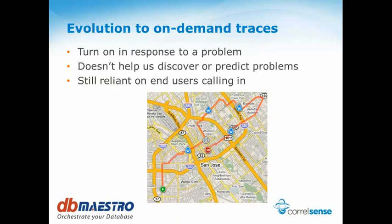Then in terms of the next evolution, we moved on to on-demand traces. We had monitoring technology that could give us data explaining what's happening and where things are going. But originally, we would turn these on in response to an issue — it's not something we would run all the time. That's great for understanding a problem, but it doesn't really help us discover or predict issues. We were still reliant on end users calling in and not really discovering ourselves when issues were occurring.